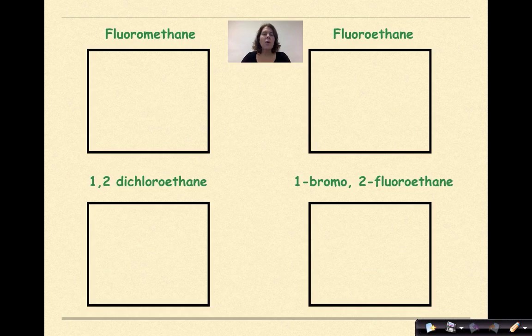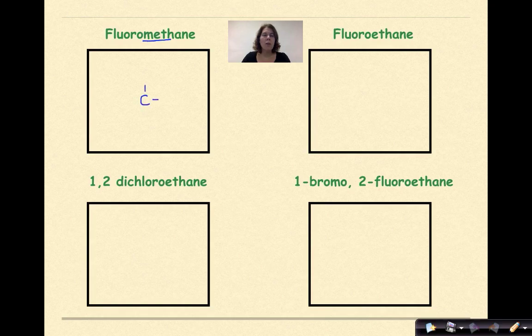Starting with fluoromethane. So the first thing I'm going to notice here is the meth part of this. So 1 carbon. Every carbon is going to have 4 bonds. It's an A-N-E ending, which again, with meth, it's only 1 carbon. So all this would be surrounded by hydrogens if it was just methane. And then we have our fluoro. So the fluorine here, you can put anywhere. So I'm going to put it on the top. So the fluorine goes right here, and then all of these other spots would be filled up with hydrogens.